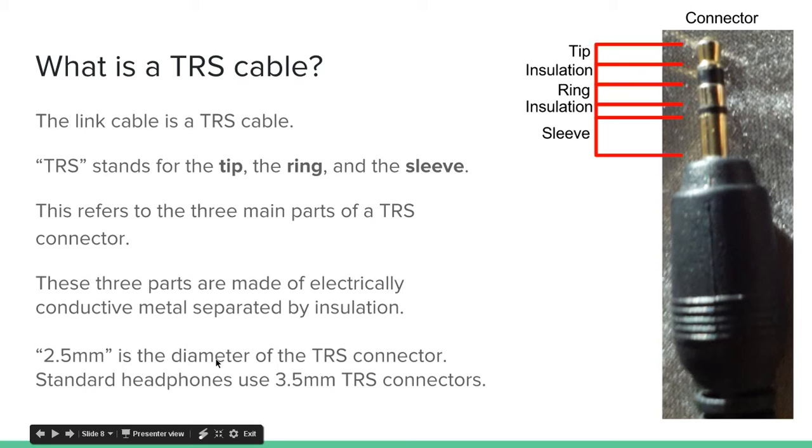2.5mm is just the diameter of the TRS connector. The connector itself is roughly a cylinder shape, so that cylinder has a diameter of 2.5mm.